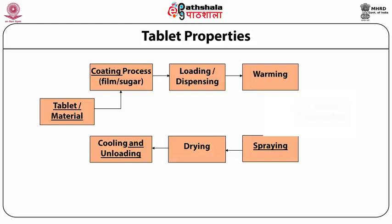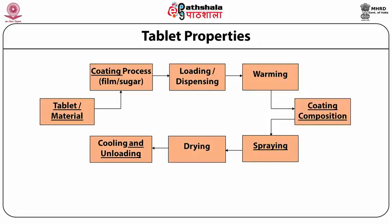As discussed, there are three primary components involved in virtually all tablet coating procedures. First, tablet core — that is, the material to be coated. Second, coating compositions. Third, coating process and equipment. All these components influence the coating process in one way or another, and thus careful selection and control of these components are necessary to achieve effective coating.